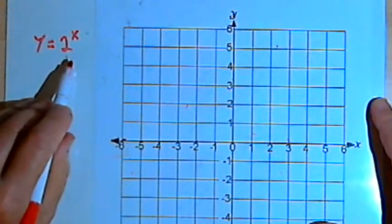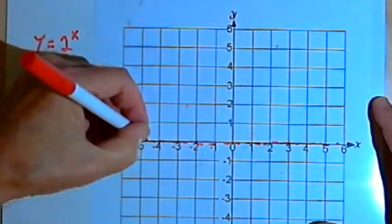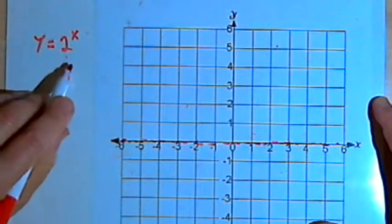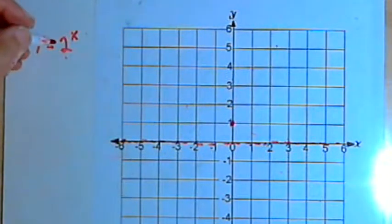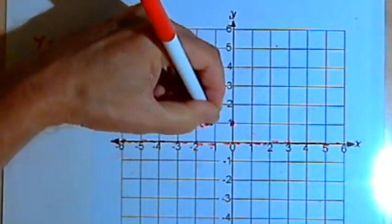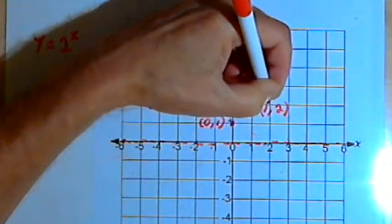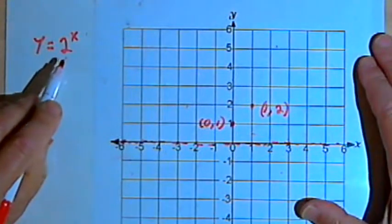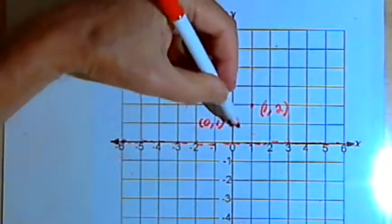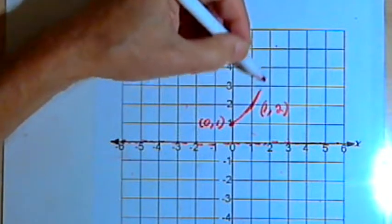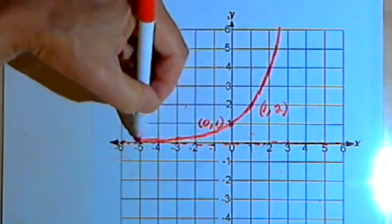Since there are no transformations going on here, I know that I'm going to have a horizontal asymptote along the x-axis. I know I'm going to have a point on the graph at the vertical intercept at 0, 1. And I'll have another point at 1, 2. This is going to be an increasing function because the base for the exponent is bigger than 1. So I can connect these points and continue the curve to make an increasing function.